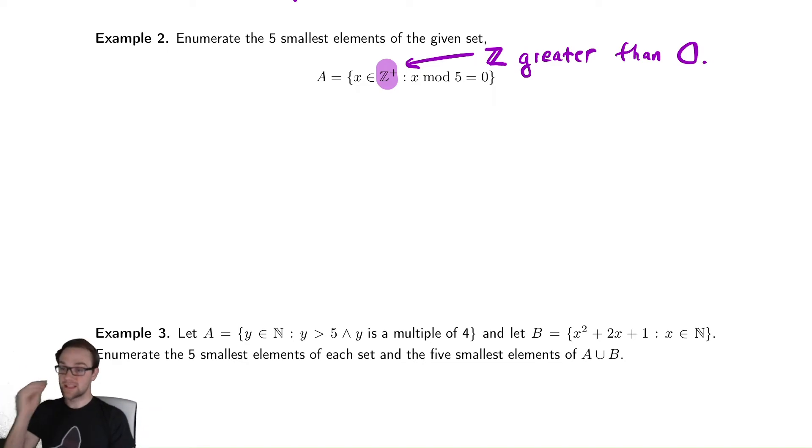So it's the set of all positive integers, integers greater than zero, such that x mod 5 equals zero. That is, the remainder when you divide by five is equal to zero.